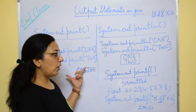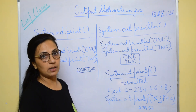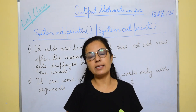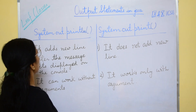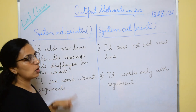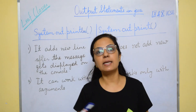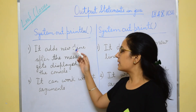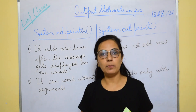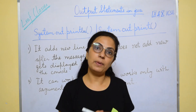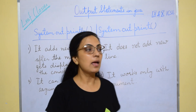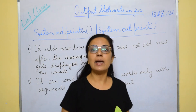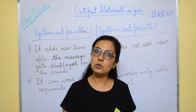I hope these things are clear. Now let us see the difference between println and print, as this is also asked in exams. The println statement adds a new line after the message is displayed, so the cursor shifts to the beginning of the new line. The print statement does not add any new line. Also, println can work without arguments — you can write System.out.println() with nothing inside — but the print statement requires an argument; without one it will give a syntax error.